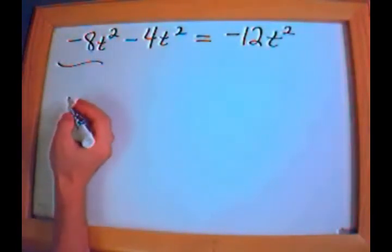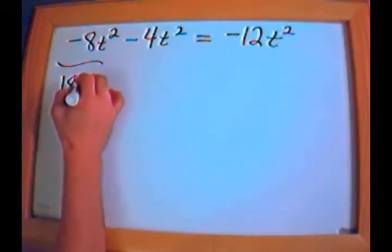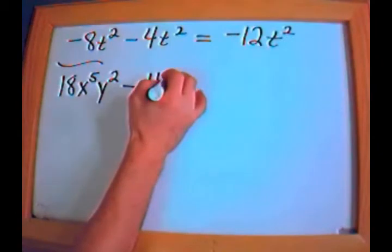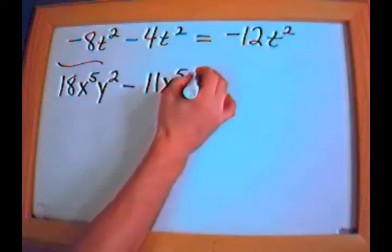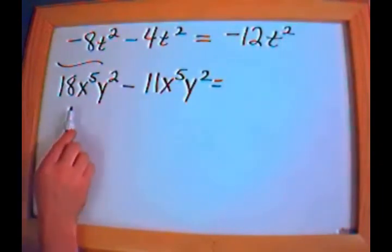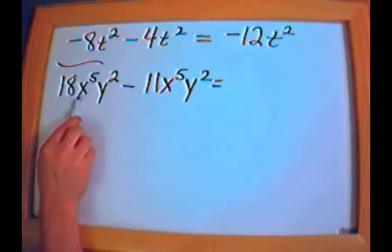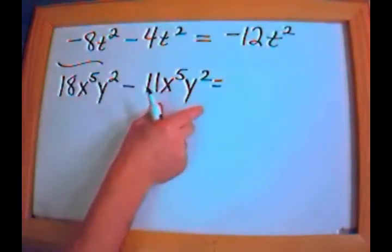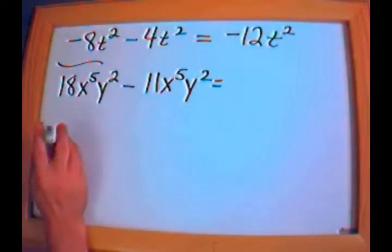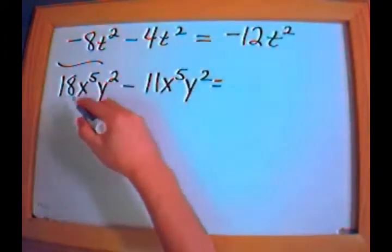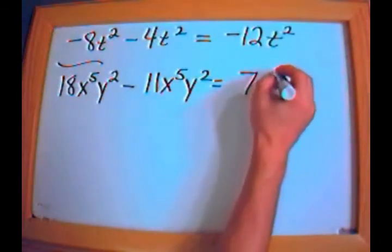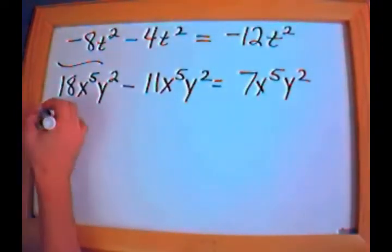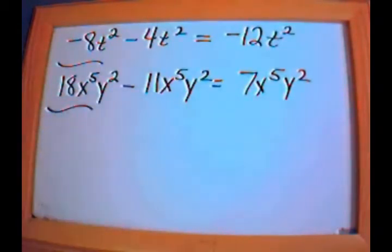What if I had 18x to the 5th power times y squared minus 11x to the 5th power times y squared? Can I simplify this? Yes. This term involves x to the 5th times y squared, and so does this term. Because the variables and exponents are exactly the same, I can just do that subtraction: 18 minus 11 is 7, so the answer is 7x to the 5th y squared. I just carry over the exponents because I'm subtracting in terms of those variables.